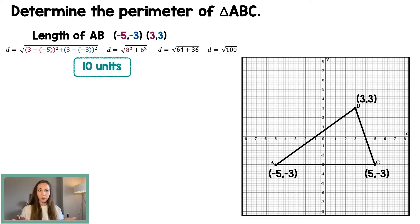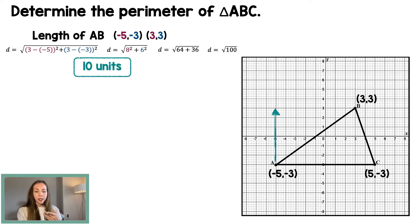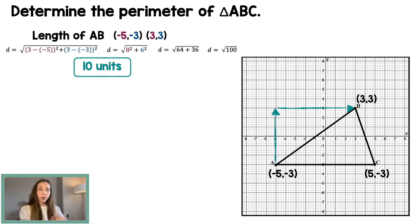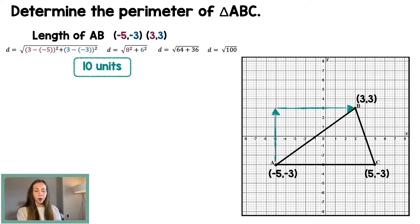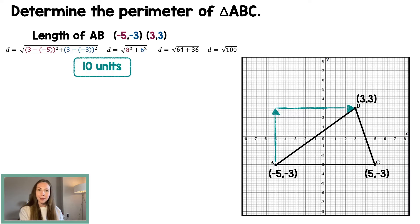You can pause this video at any point to write this down. What I'm showing here with these arrows is that you could think about this as a vertical distance of 6 and a horizontal distance of 8. If you prefer, you can kind of box that out and count it up instead of putting it all into the distance formula. We're actually going to do an entire example where we take a Pythagorean theorem approach instead.